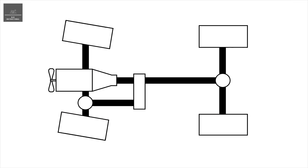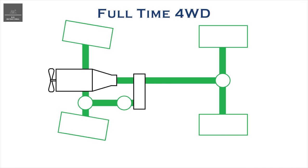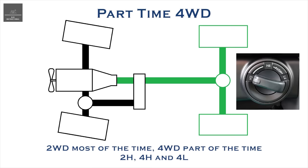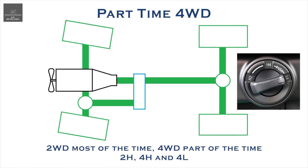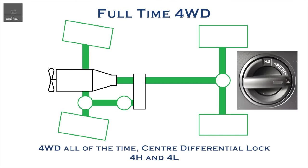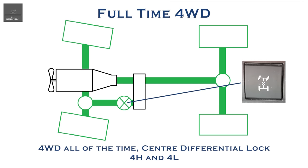4WD vehicles will have either part-time or full-time 4WD systems. Part-time simply means that the vehicle's engine typically drives two wheels most of the time, yet can be switched to 4WD for greater traction part of the time. A part-time 4WD will typically have a 2 high, 4 high and 4 low option. A full-time 4WD system simply means that the engine typically drives all 4 wheels of the vehicle all of the time. These will typically have a 4 high and a 4 low option, with a centre differential lock. More on this shortly.